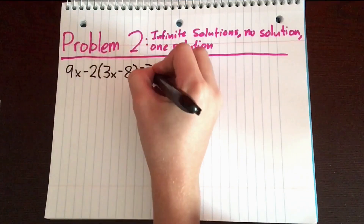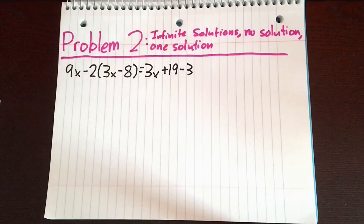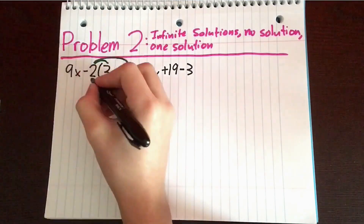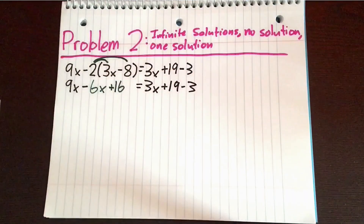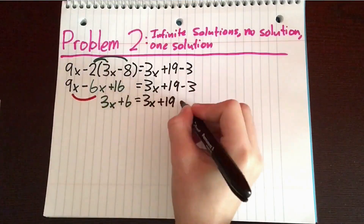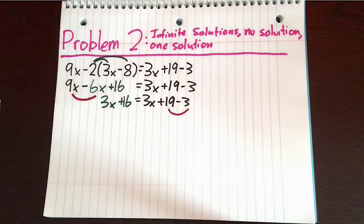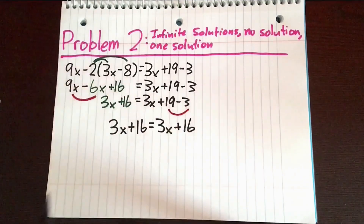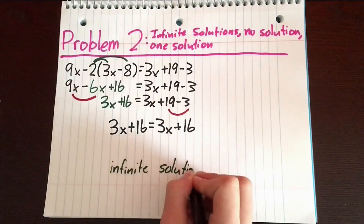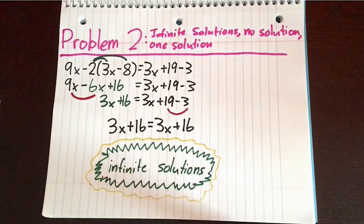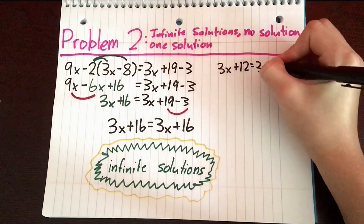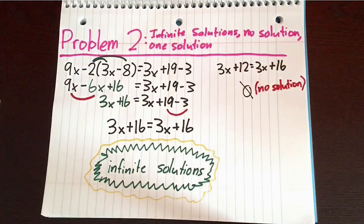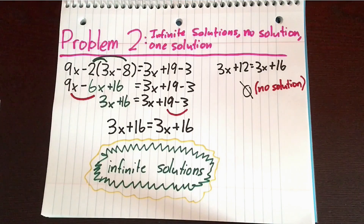In our second problem, we have infinite solutions, no solution, and one solution. Our first example is 9x minus 2 times (3x minus 8) equals 3x plus 19 minus 3. We distribute and get 9x minus 6x plus 16 equals 3x plus 16, which gives us infinite solutions. An example of no solutions is 3x plus 12 equals 3x plus 16 — that gives no solutions.